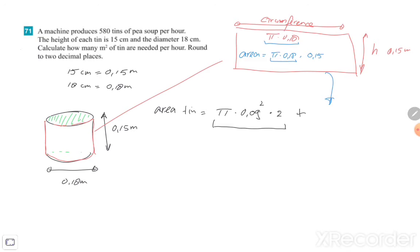So pi times 0.09 squared times 2 plus pi times 0.18 times 0.15. And that is equal to 0.135, etc. Square meters.